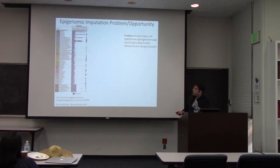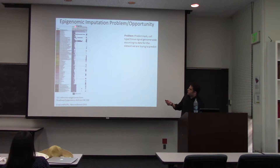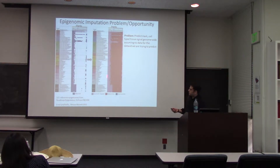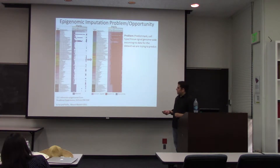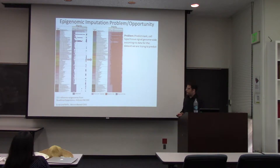The problem we're interested in: given a grid like this with many cell and tissue types lacking complete coverage, could we go from a sparse grid to a complete grid where we have both experimental data and computationally imputed coverage of every experiment? And even if we do have an experiment done, we might want a computationally imputed version of that experiment as well, which has a number of applications.